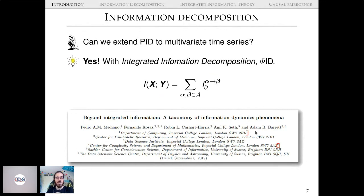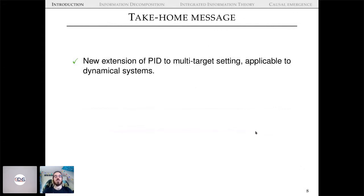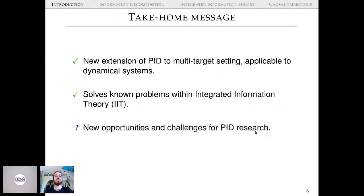We can in fact extend PID to multivariate time series with a construct we call Integrated Information Decomposition, or Φ-ID. This is the paper I'll be mostly talking about today — you can look it up on the archive. The take-home message is that we came up with a new extension of PID to the multi-target setting, applicable to multivariate dynamical systems, which solves known problems within integrated information theory.